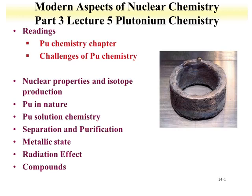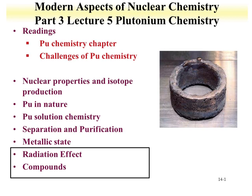Welcome to Part 3 of Lecture 5 for Modern Aspects of Nuclear Chemistry. This lecture is on the chemistry of plutonium. The previous lecture covered nuclear properties, plutonium in nature, plutonium solution chemistry, and separations and purifications. Part 2 evaluated the metallic state of plutonium. In Part 3, we're going to briefly discuss radiation effects on plutonium compounds, and then go into plutonium compound chemistry.